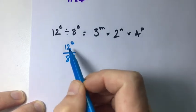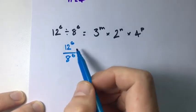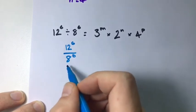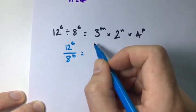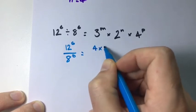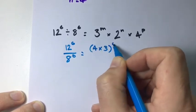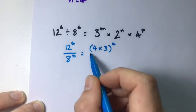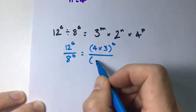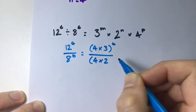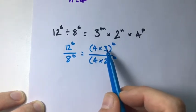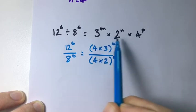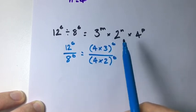Now let's break these up into some factors. Let's say that 12 to the power of 6 is the same thing as 4 times 3 to the power of 6 over 8, which is 4 times 2 to the power of 6. So we use 4, 3, and 2 because that's what they're looking for here, so this will make it easier.